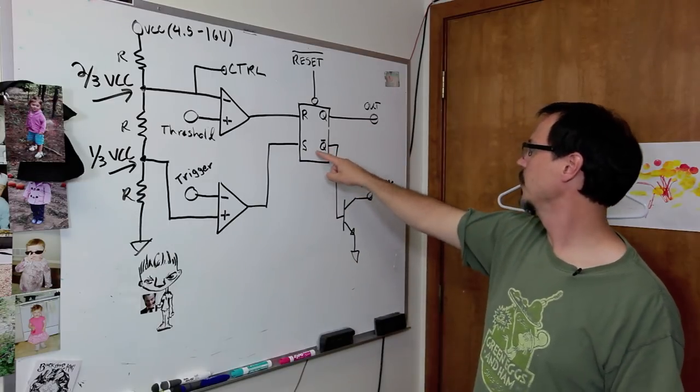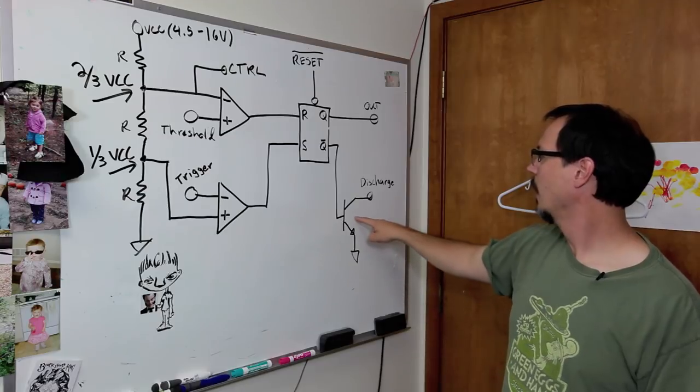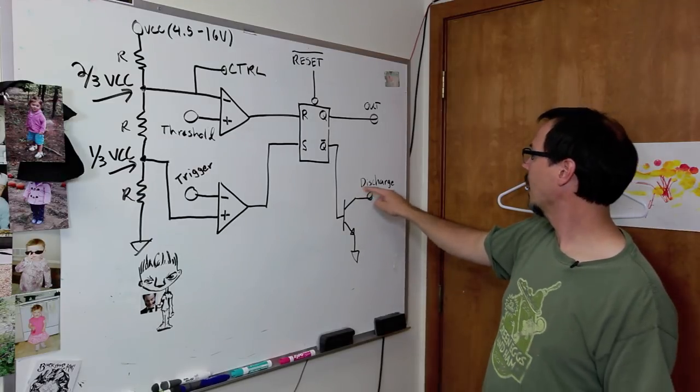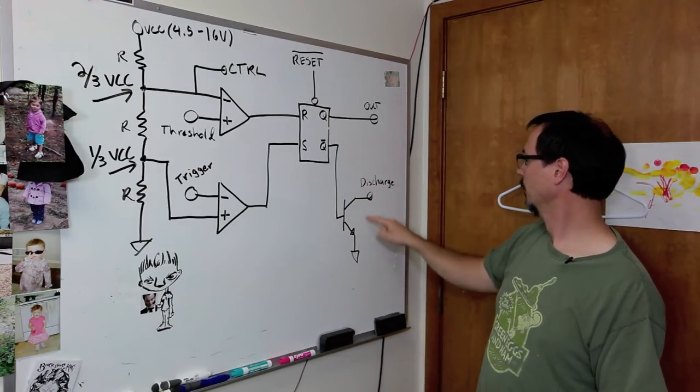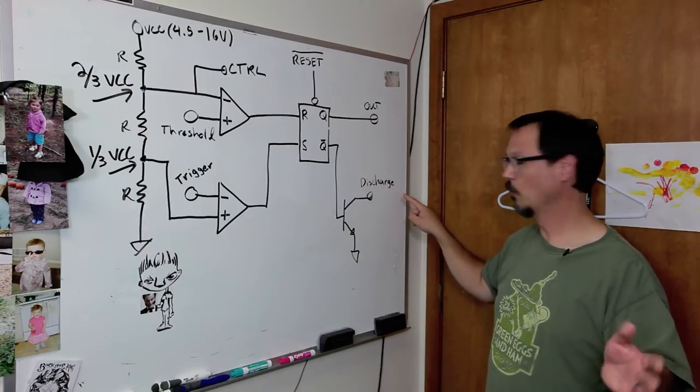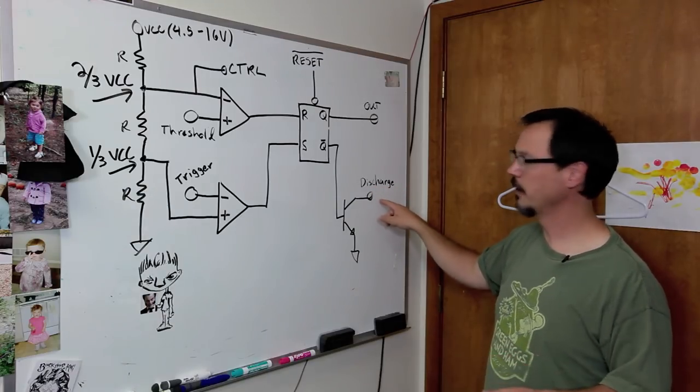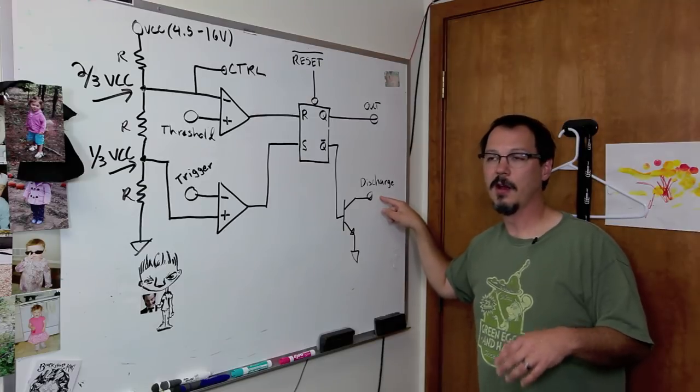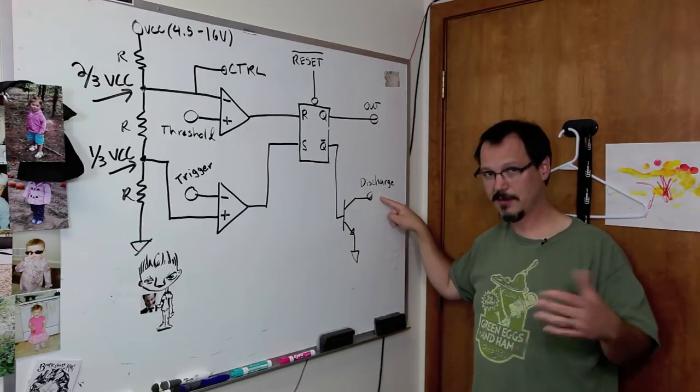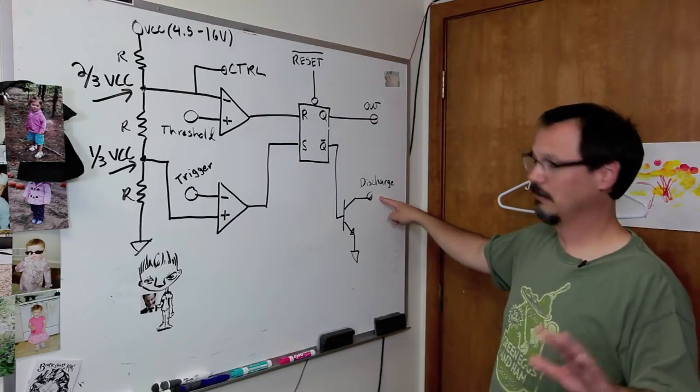Now, also attached to this thing is this little AI out here, NPN transistor. And external to the part is a pin called discharge. And we'll get into what that's all about. Basically, it's used typically for discharging a capacitor that's in the circuit, which you may or may not be using. You probably will.